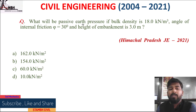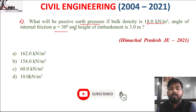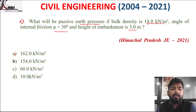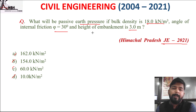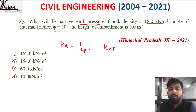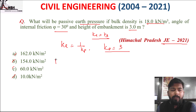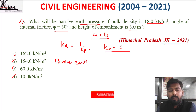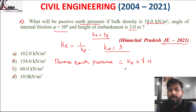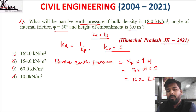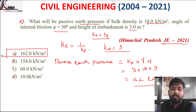Next question: what will the passive earth pressure be if bulk density is 18 kN/m³, angle of friction φ = 30°, and height is 3 m? Options: A 162, B 154, C 60, D 10 kN/m². For passive earth pressure, Kp = (1 + sinφ)/(1 − sinφ) = 3. Passive earth pressure = Kp × γ × H = 3 × 18 × 3 = 162 kN/m². Option A, 162 kN/m², is correct.